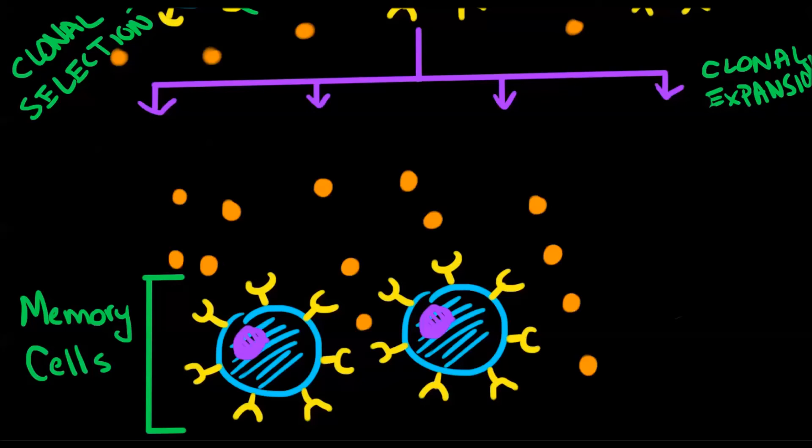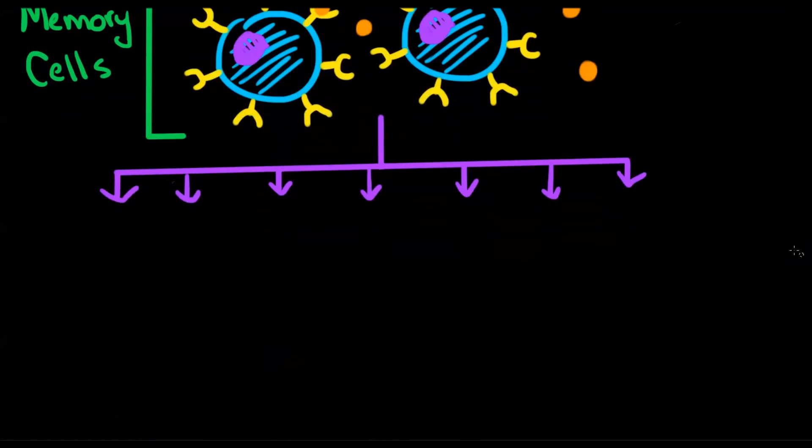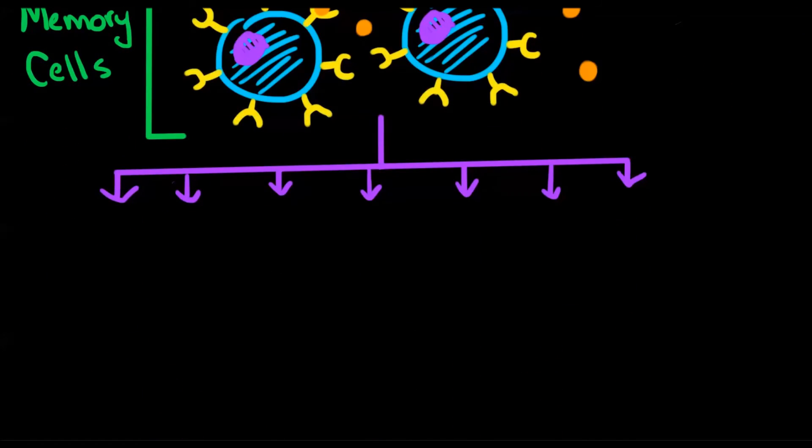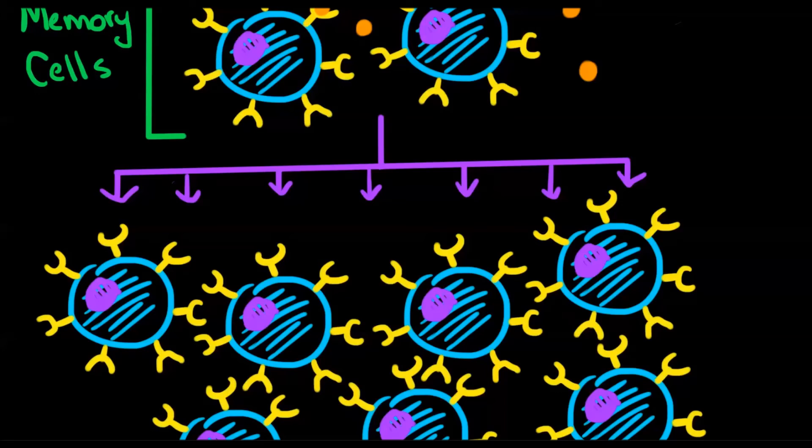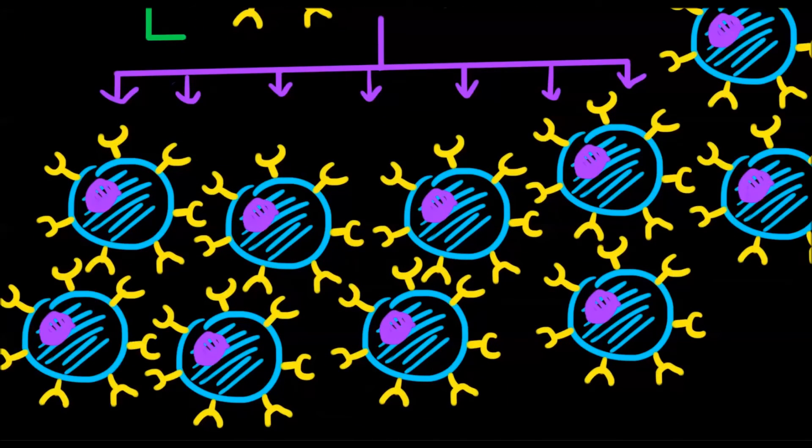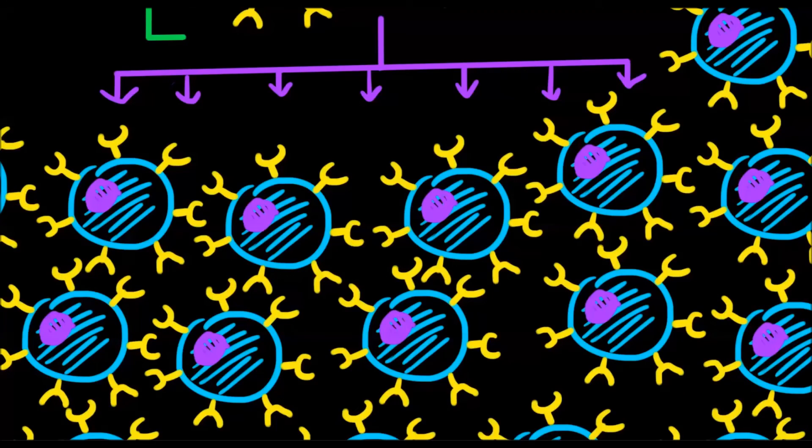If they are exposed to their matching antigen again, it's go time. They give their best one-liner, it's about time, or something like that. And then they get to work breeding a new army of immune soldiers with the same matching receptors that allowed them to fight the pathogen before. Except this time, the army is built faster and stronger than before, and they clear the body of the pathogen before you feel so much as a tickle in your throat.